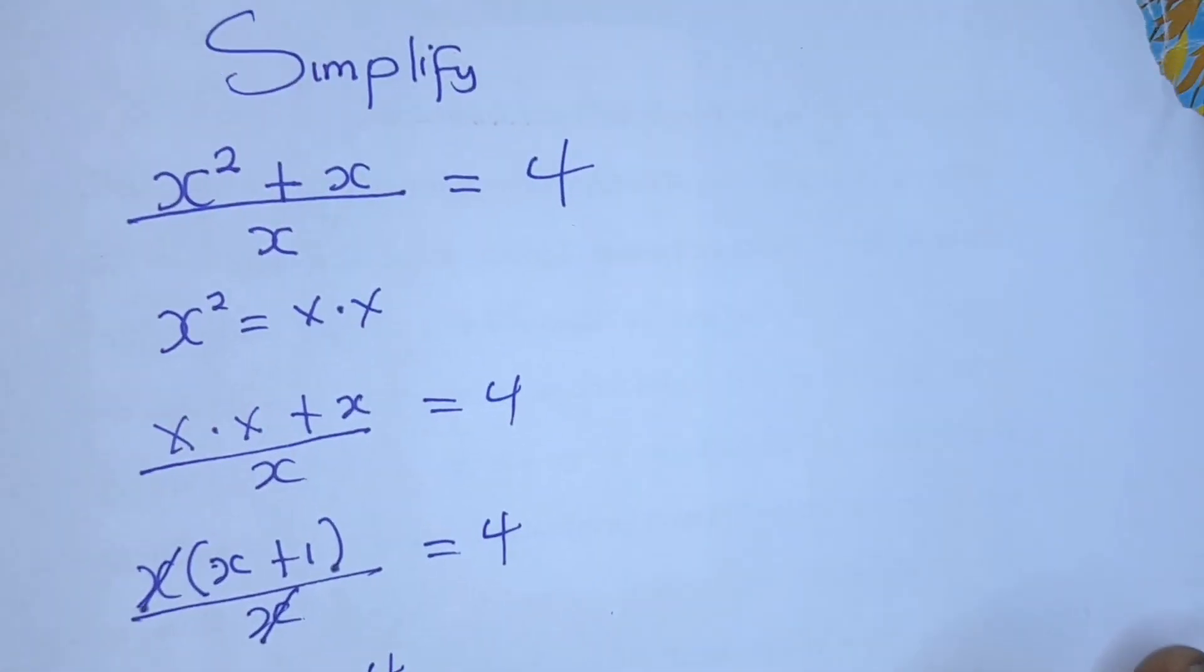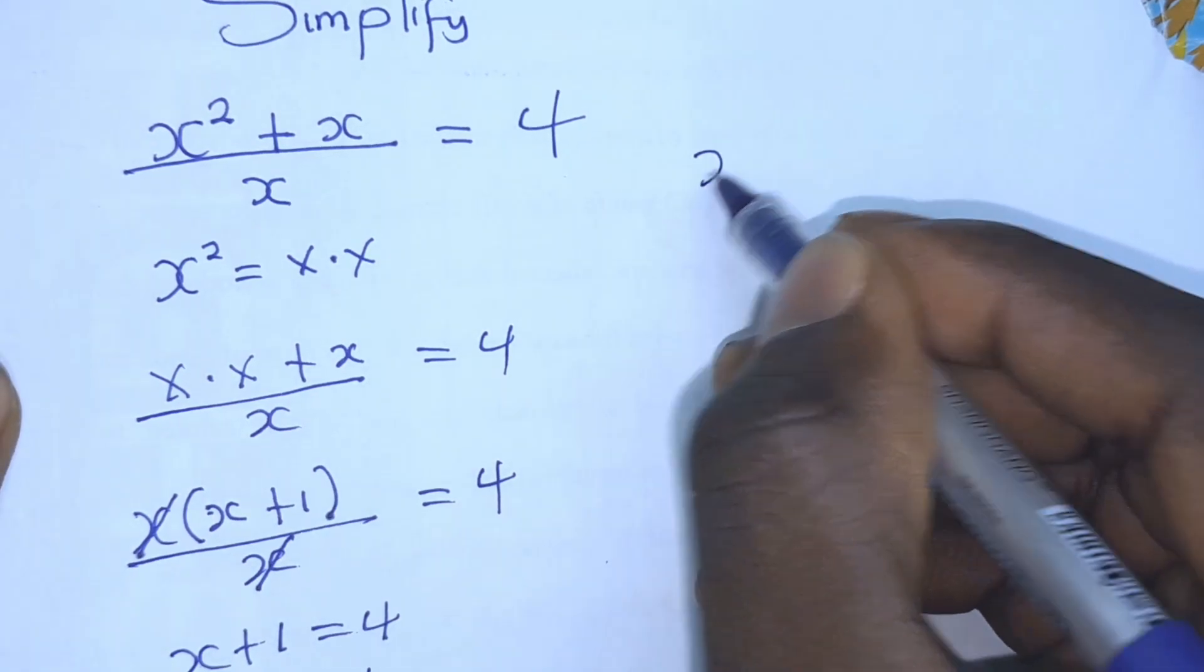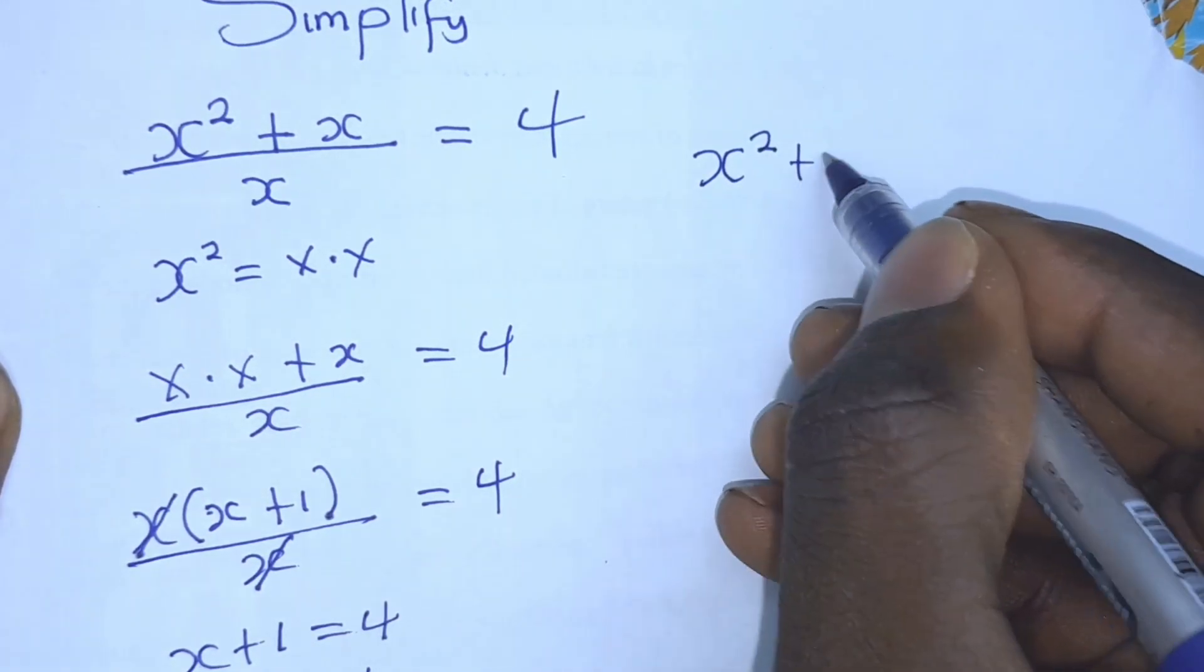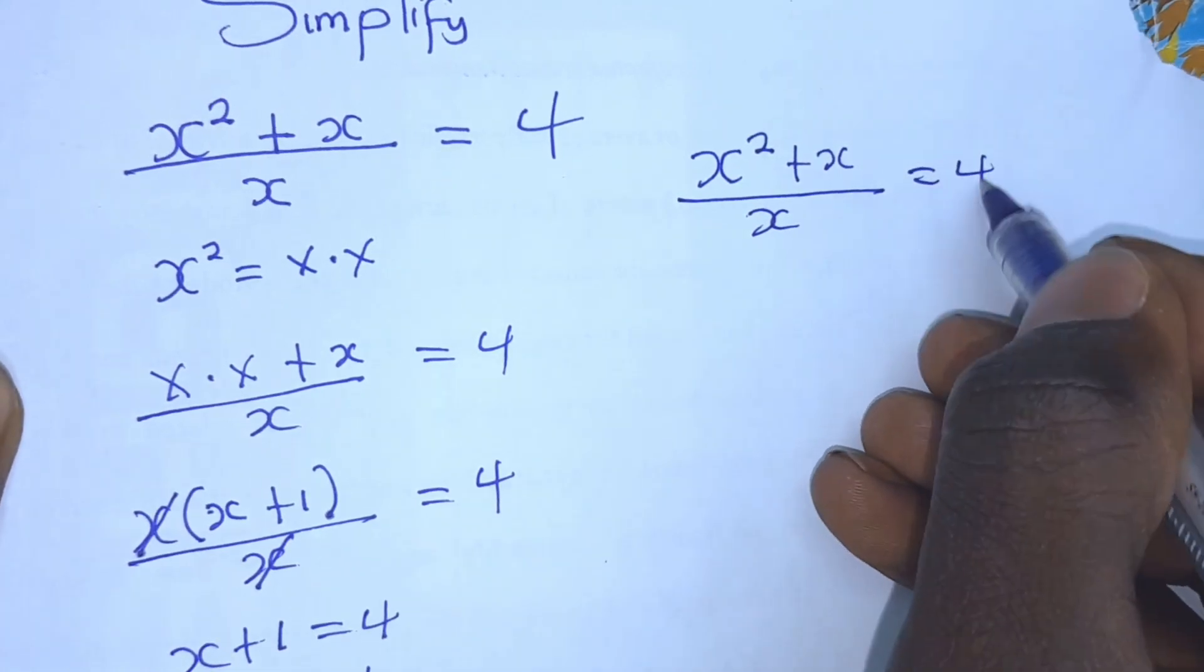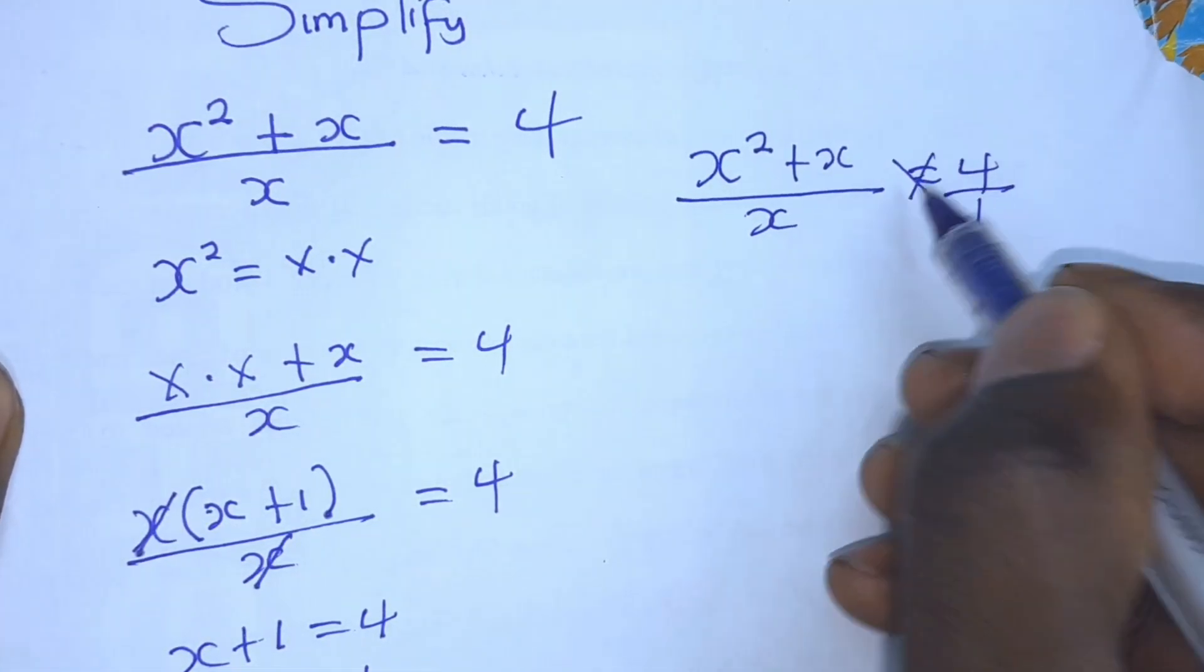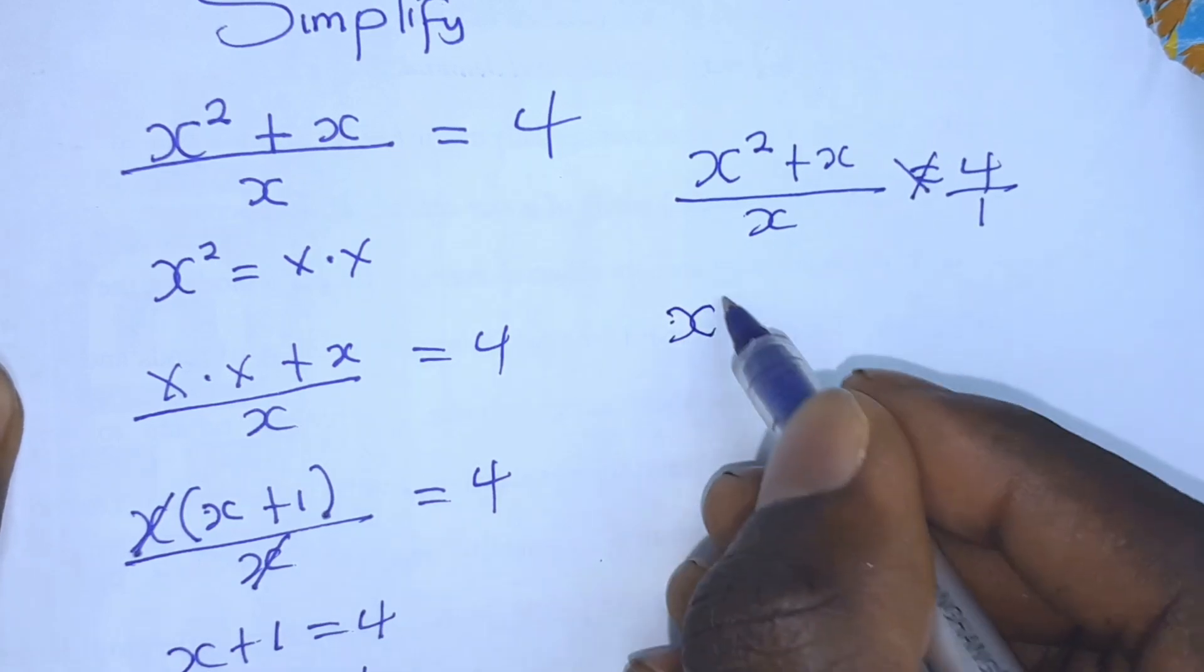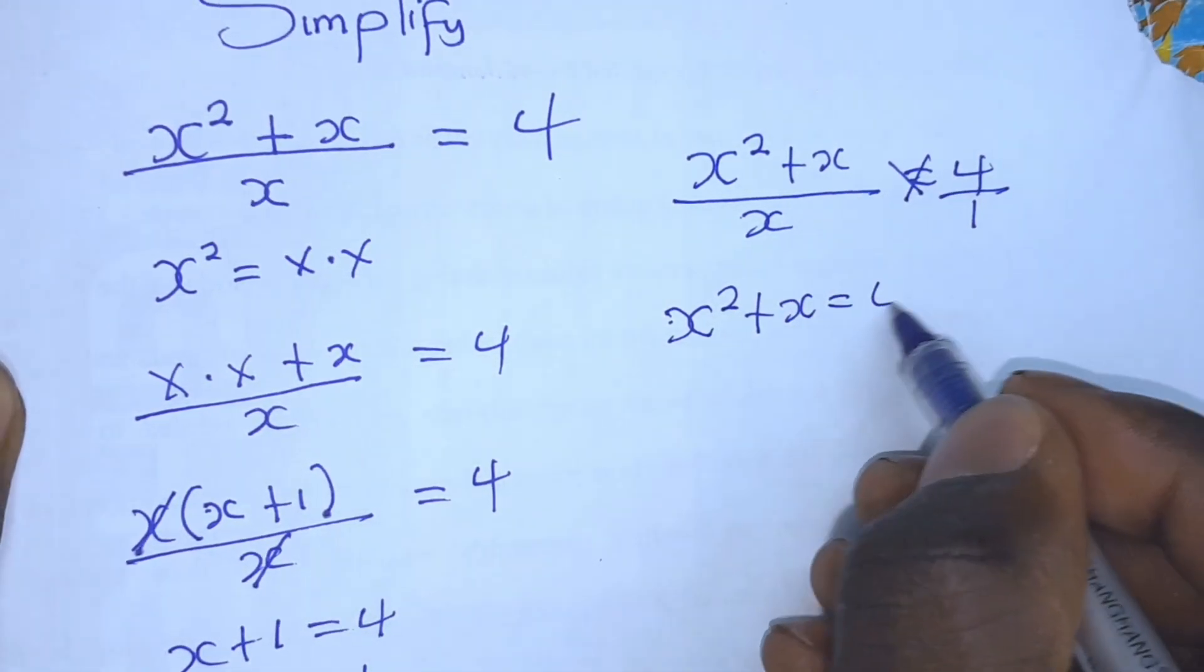So, the second method we can use here. We have x squared plus x all over x, which is equal to 4. From this step, we can just cross-multiply. We have x squared plus x is equal to x times 4. We have 4x.